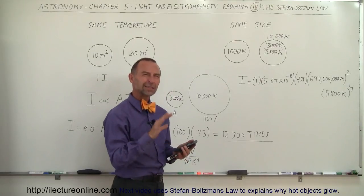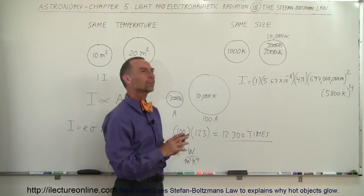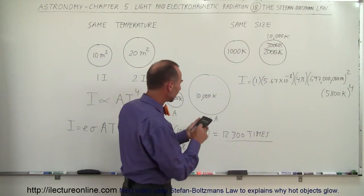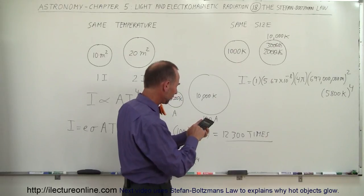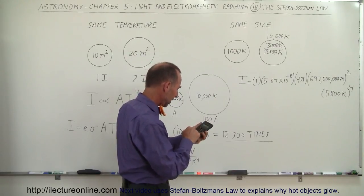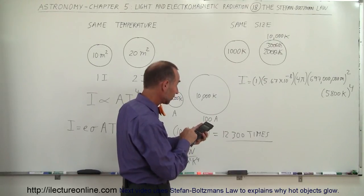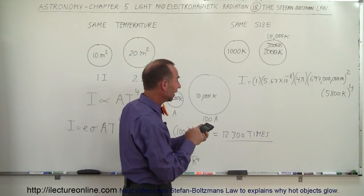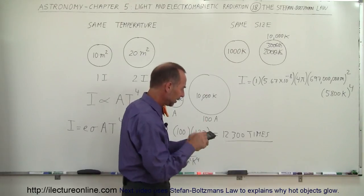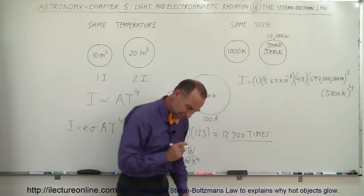With a calculator, hopefully I got the radius of the sun correct, it's about 697,000,000 meters. 5.67 E to the minus 8, times 4 times pi, times 697,000,000 squared, and then times 5,800 to the fourth power equals 3.92 times 10 to the 26th.